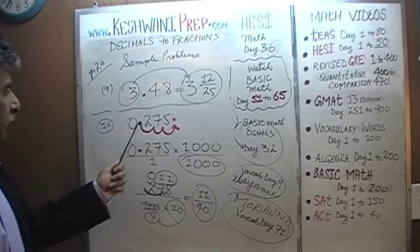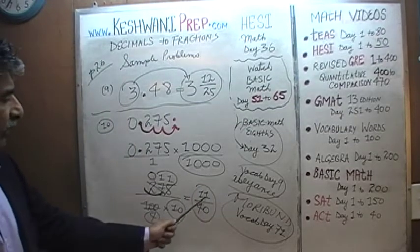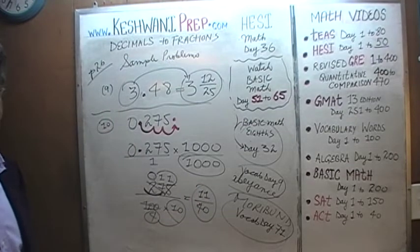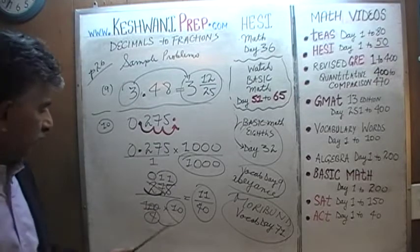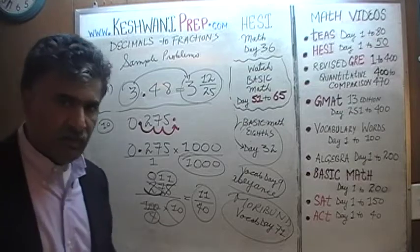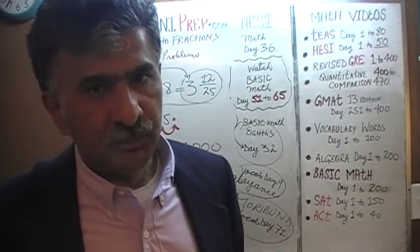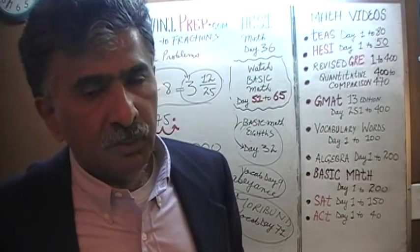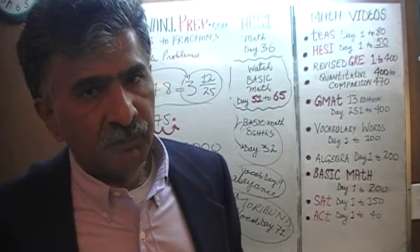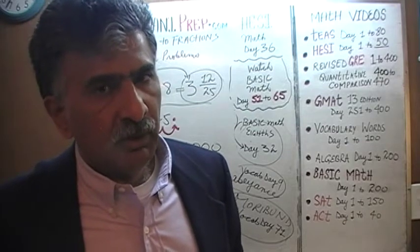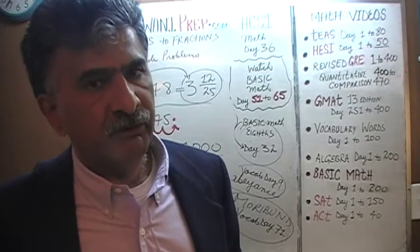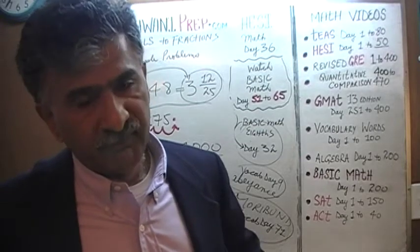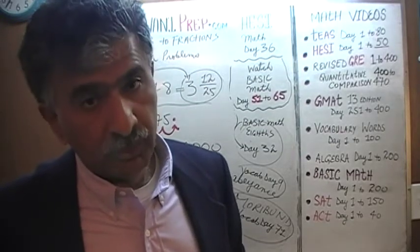The answer is 0.275 is the same as 11 over 40. Now, if you don't feel comfortable dividing top and bottom by 25 in one shot, you could divide by 5 first and then by 5 one more time — two steps — because 5 times 5 is 25. Let's do it that simpler way.